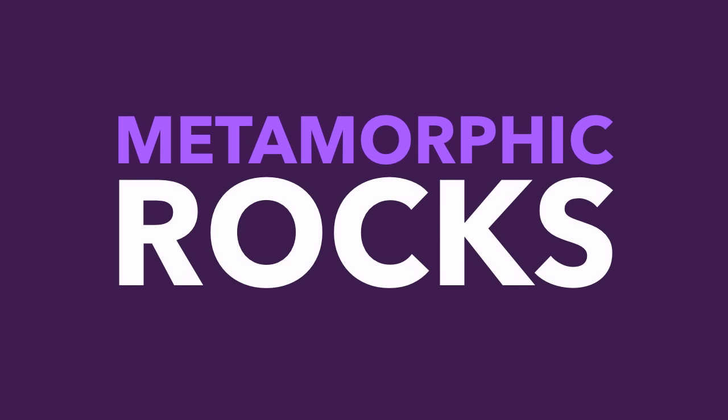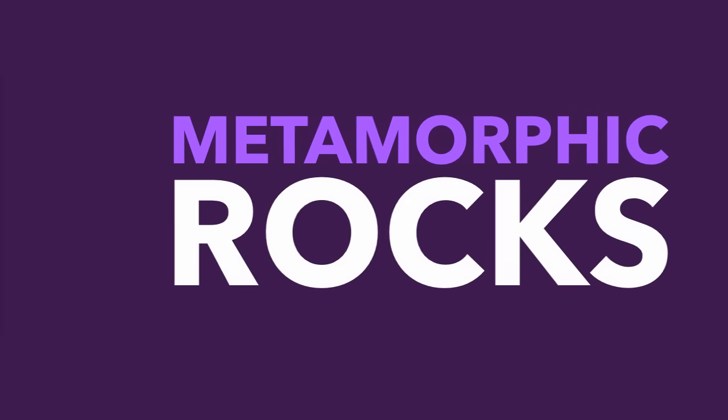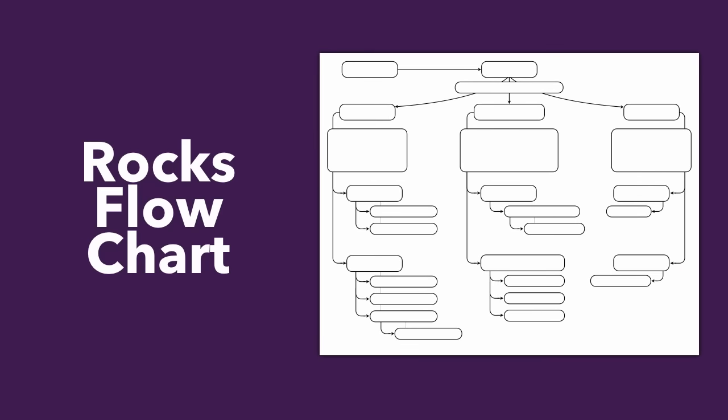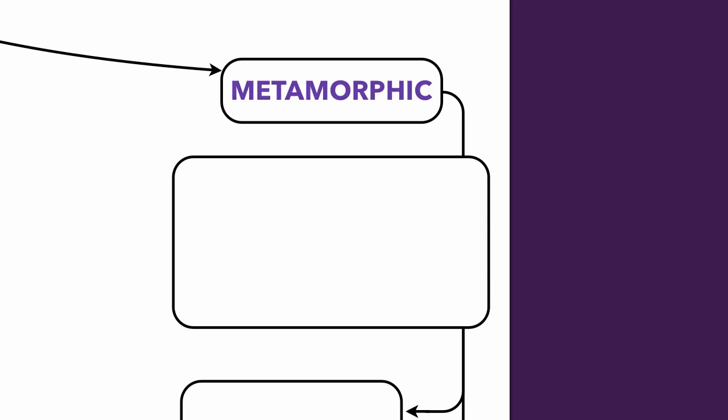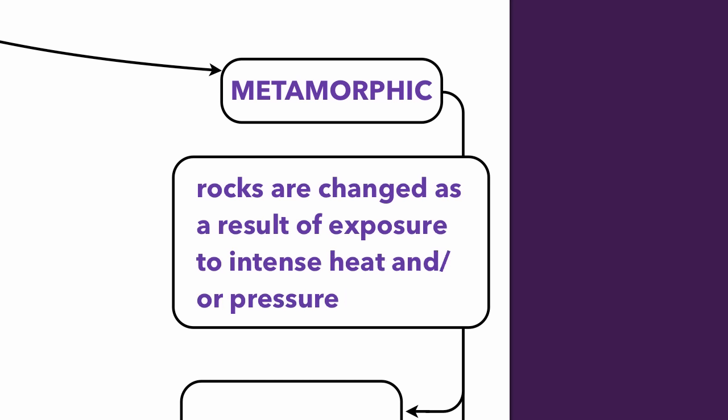In this video we're going to be talking about metamorphic rocks. Please get your rocks flowcharts ready so we can fill in our final third column. Recall, rocks are classified according to how they form. Igneous form from cooling and solidified magma. Sedimentary form from compacted and cemented sediments. And now our metamorphic rocks — these are ones that undergo some sort of change, a metamorphosis. What drives that change is exposure to really intense heat or intense pressure. Metamorphic rocks are rocks that are changed as a result of exposure to intense heat and/or pressure.